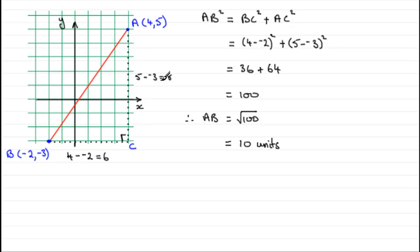And the same applies to the difference in the y-coordinates. If instead of doing 5 minus minus 3, you did minus 3 minus 5, you'd get minus 8. But when it comes to squaring minus 8, you're going to get 64 anyway. So, it doesn't matter which way round you subtract your coordinates. As long as you do the difference in the x-coordinate squared plus the difference in the y-coordinate squared.